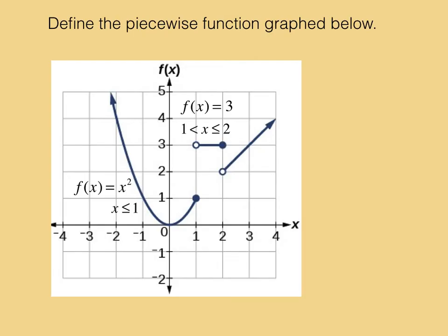The last piece is a linear function. This one is the identity function, because it would go through the origin, and it has a slope of 1, so this function is f of x equals x, but it is defined x is greater than 2.